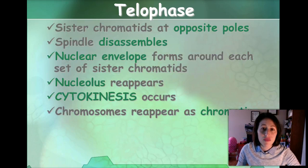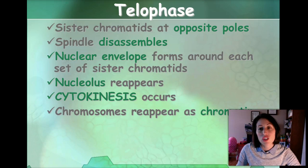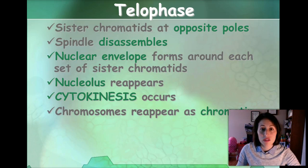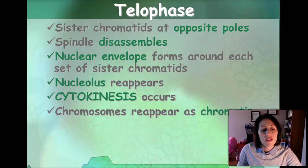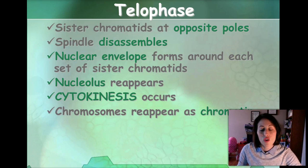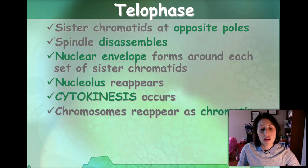The last phase of mitosis is telophase. The sister chromatids are officially at the opposite poles. The spindle fibers start to disappear. The nuclear envelope reforms around the new sets of chromatids. The nucleolus reappears, and then cytokinesis starts. The chromosomes start to uncoil and go back to their chromatin.